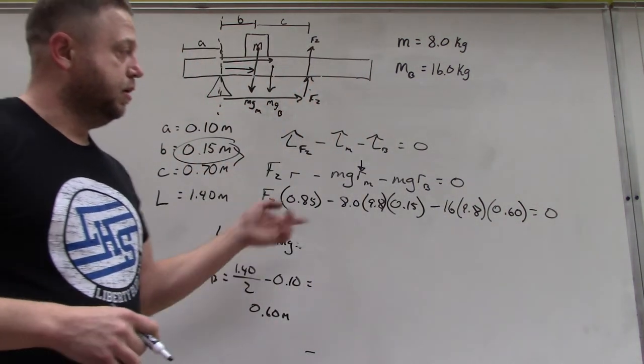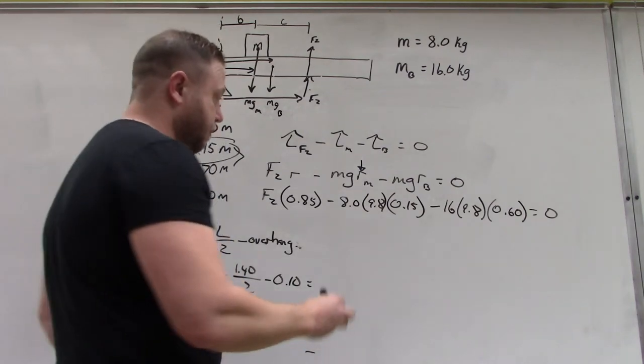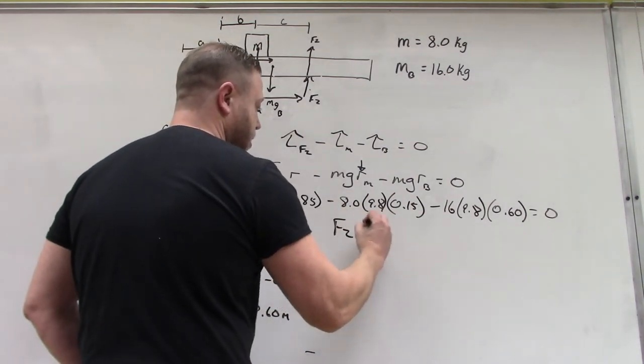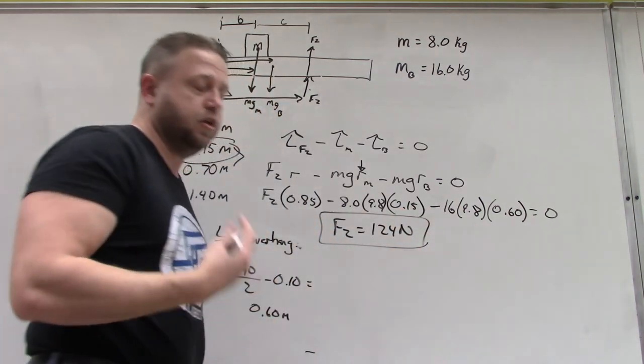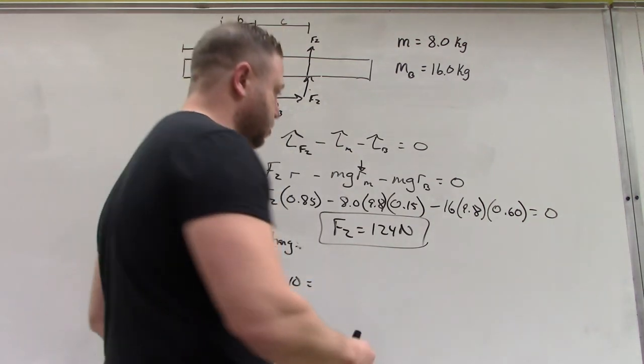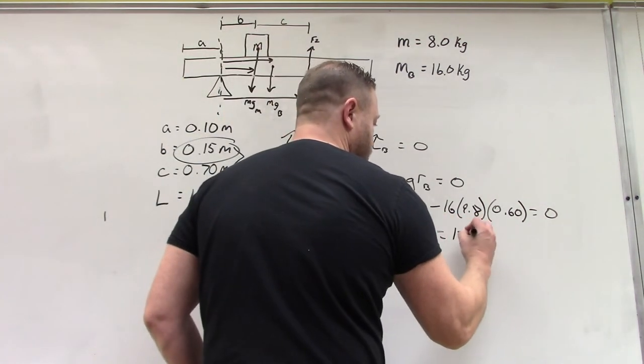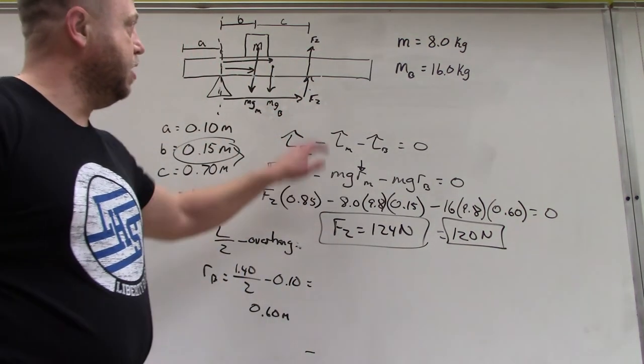Minus mgr for the beam, so 16 times 9.8 times 0.6, and we set that all equal to zero. We only have one value left in this equation to solve for, so F2 equals 124 newtons. If I round that to two sig figs, we can have 120. Now I know the value of this force.